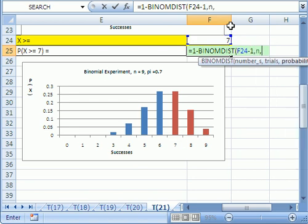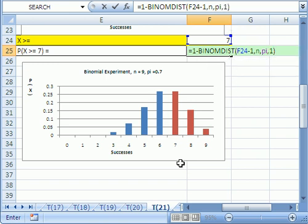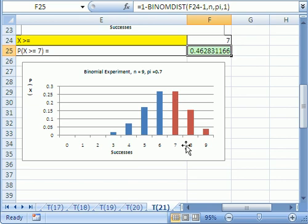Comma, the number of trials is n, comma, pi is the probability, comma, and one is to tell it cumulative. Then it will go from zero all the way up to the six. Control-Enter. There it is, 0.46.